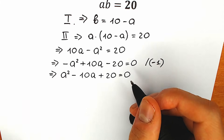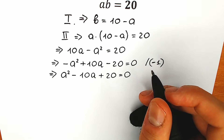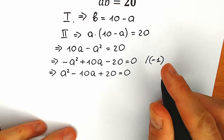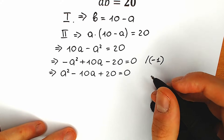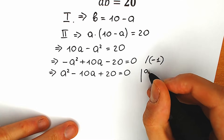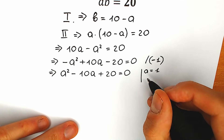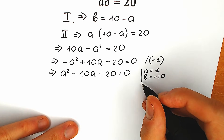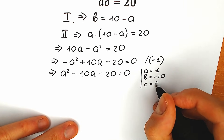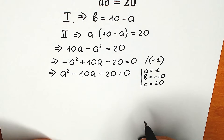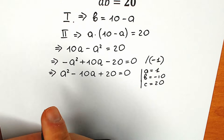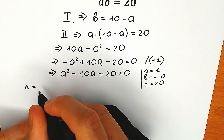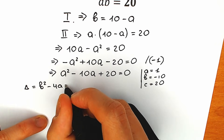This is our quadratic equation. Now let's solve it. I'm going to use the basic method of coefficients. So a equals 1, b equals minus 10, and c equals 20. We know all these coefficients. Let's start with the discriminant. So we have D equal to b squared minus 4ac.